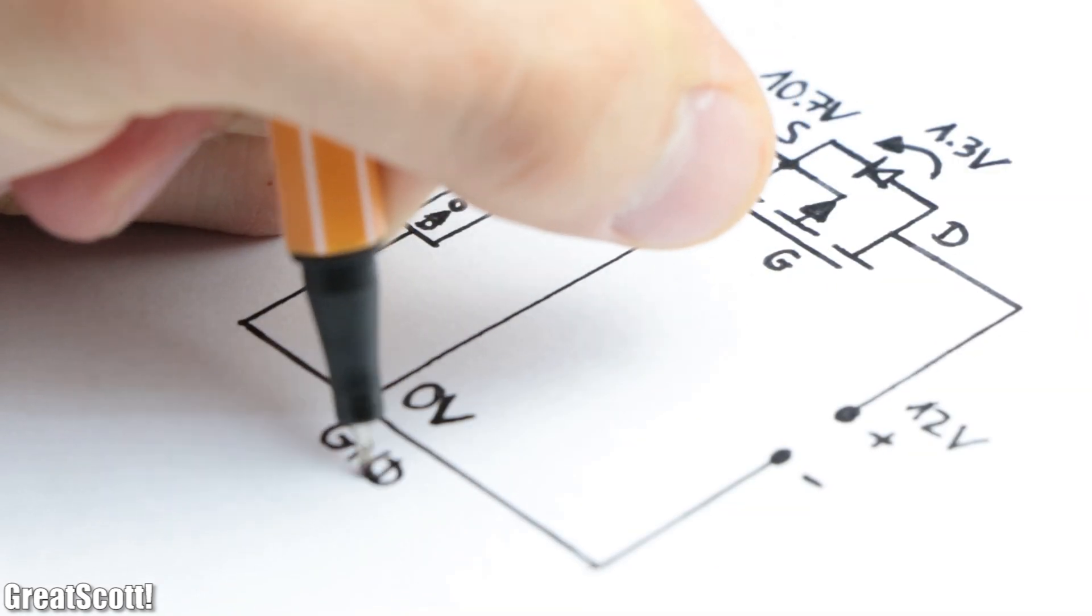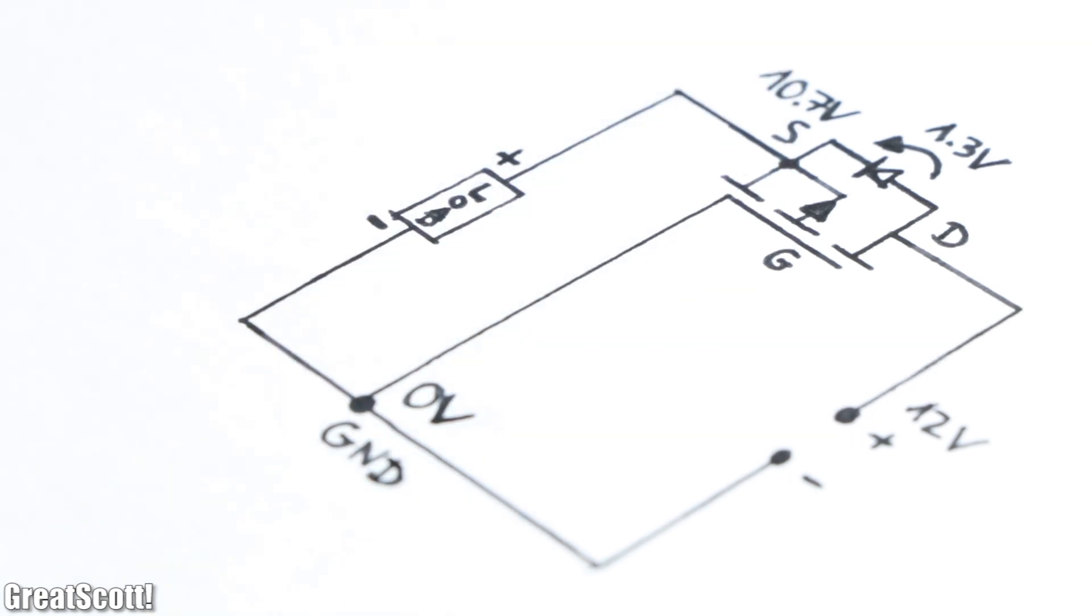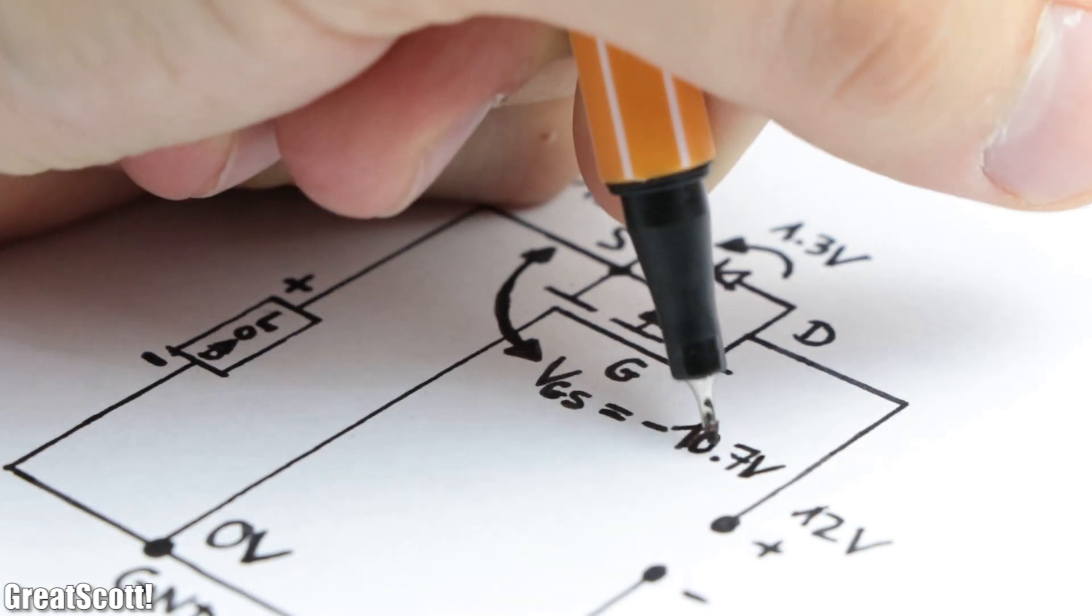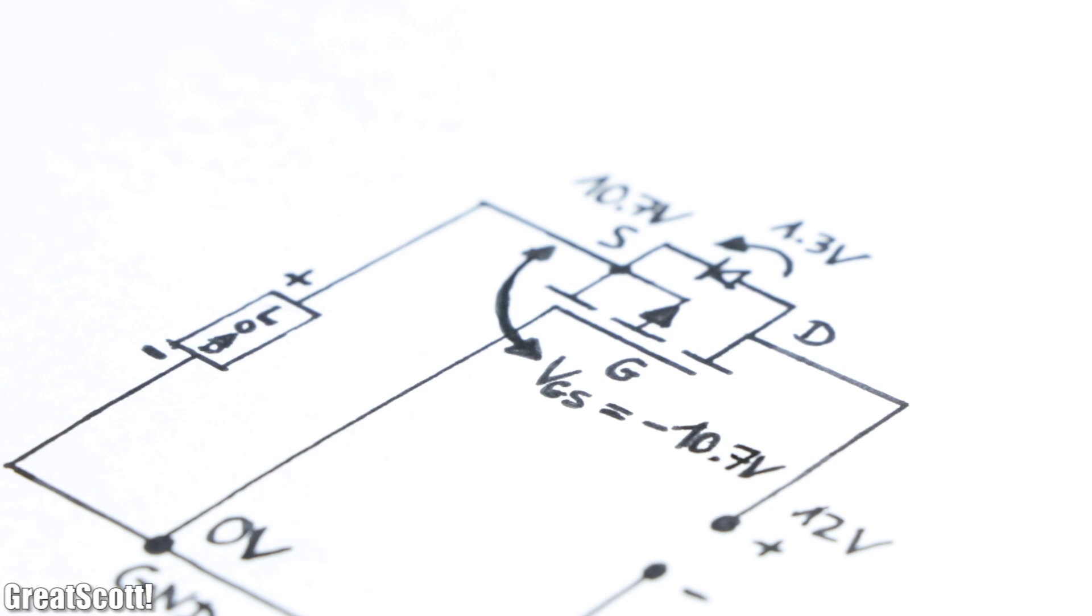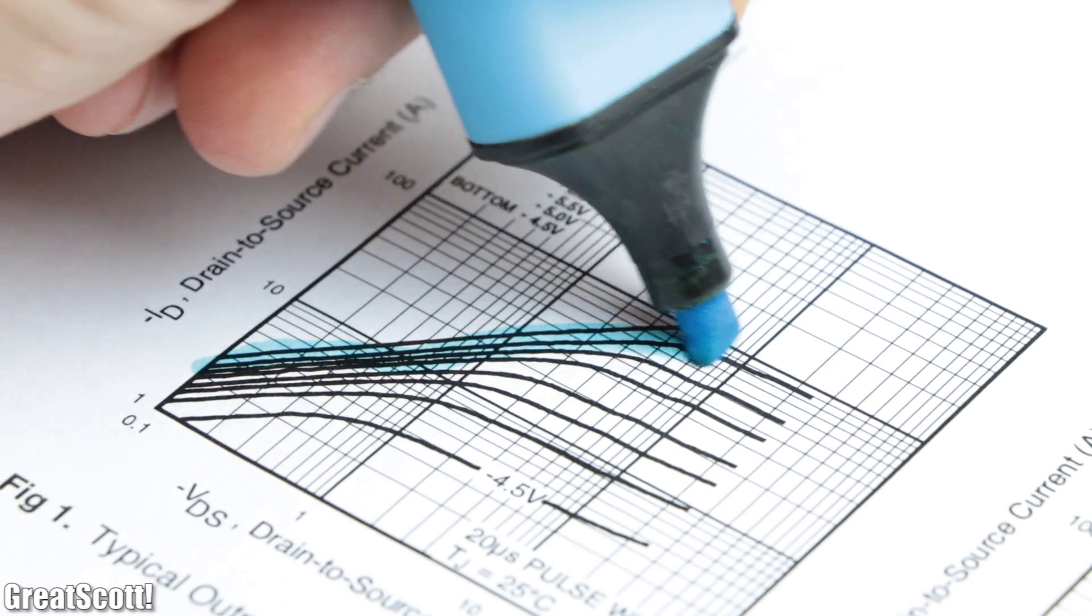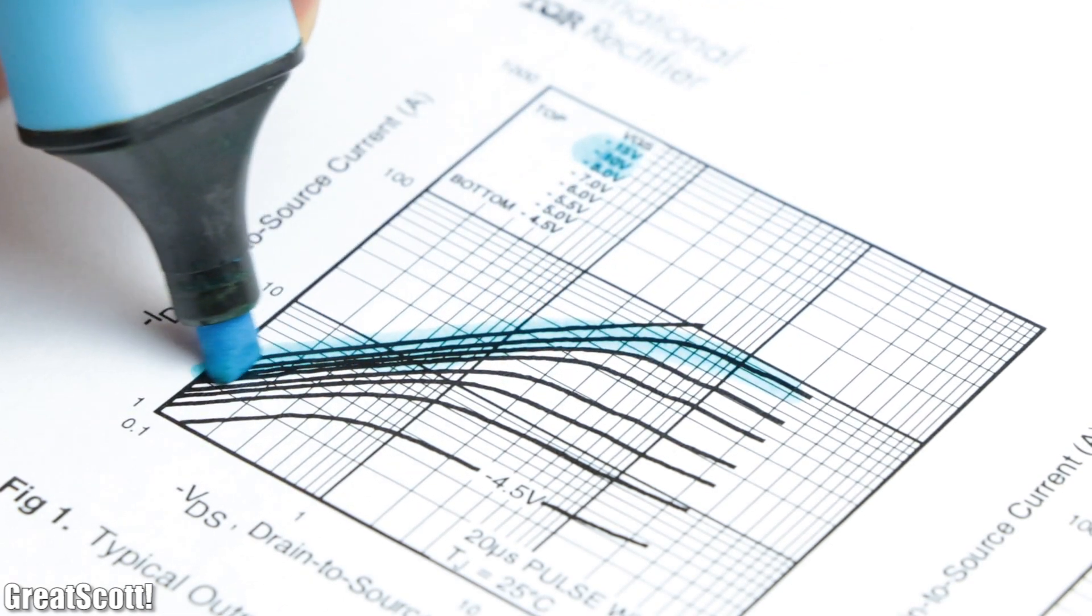And since the gate is connected to ground, so 0 volts, we got a gate to source voltage of minus 10.7 volts, which according to the MOSFET's output characteristics graph turns it on.